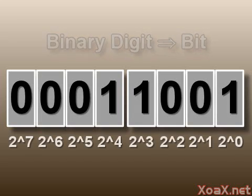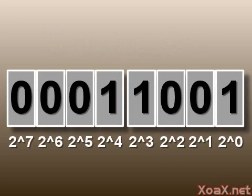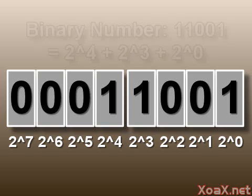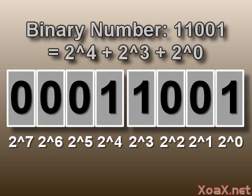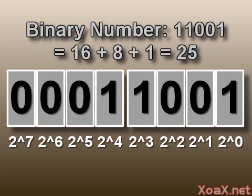Since there are only two possible states, digits in binary represent powers of 2. This byte, for example, represents this binary number, which is 2 to the 4, plus 2 to the 3, plus 2 to the 0, which equals 16 plus 8 plus 1, or 25.